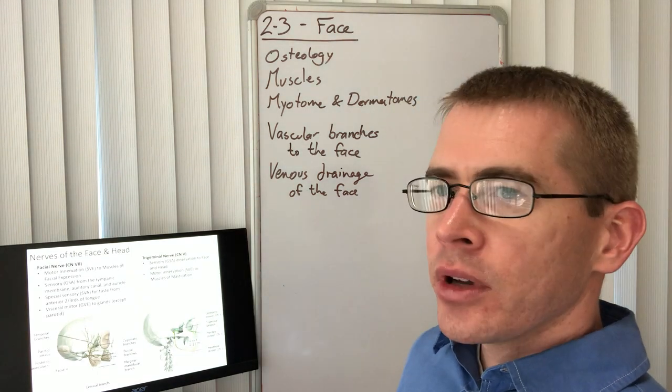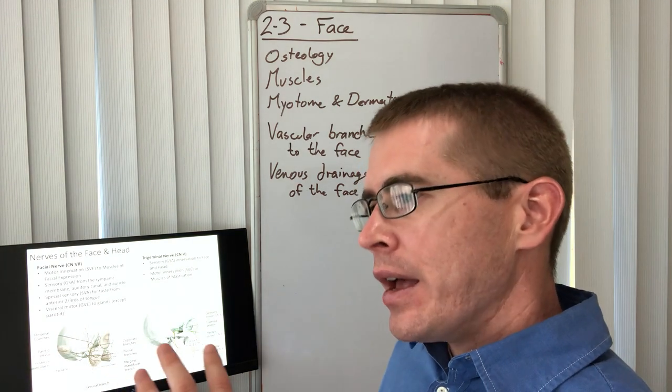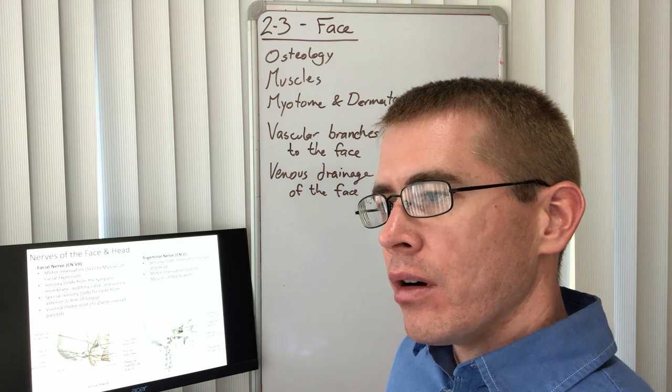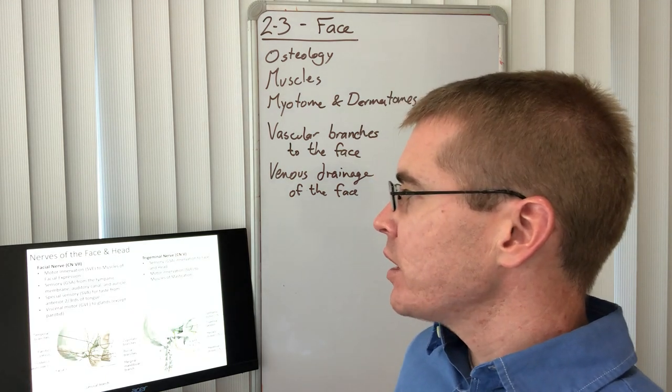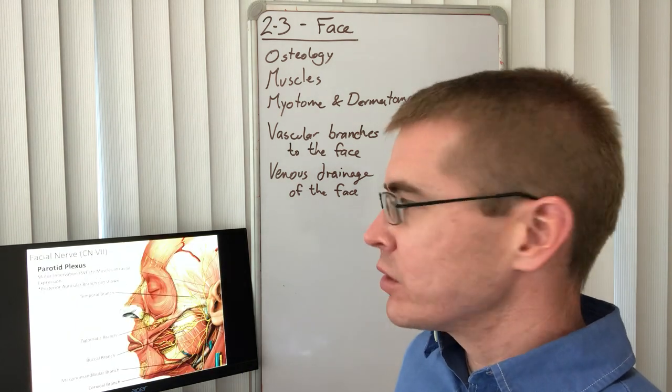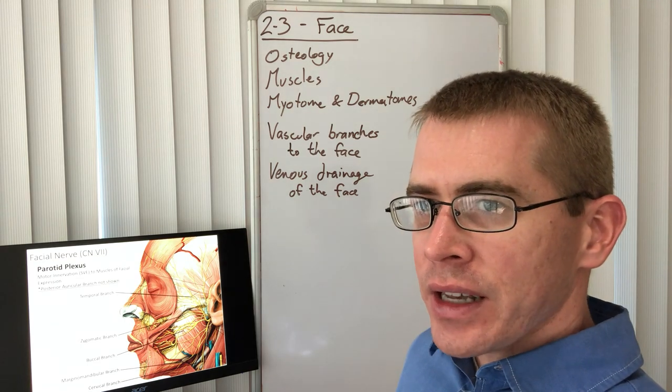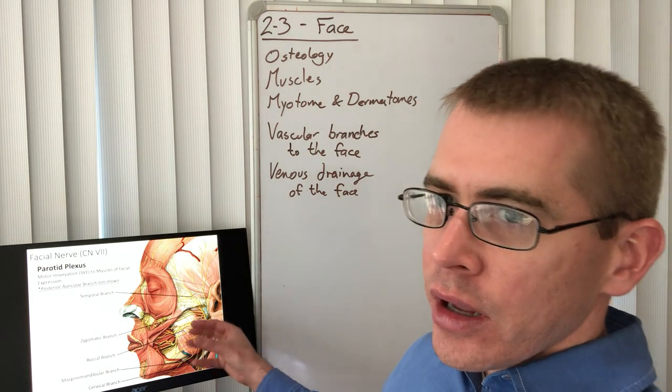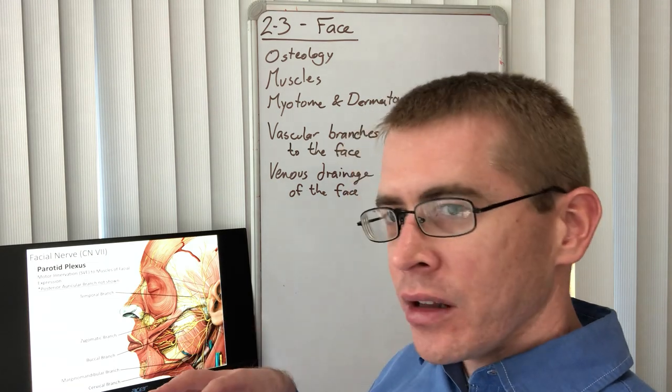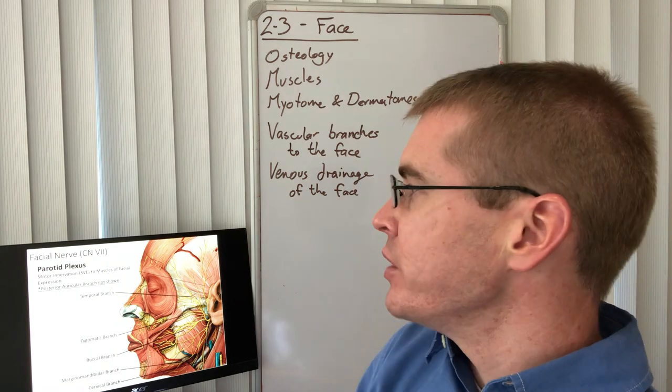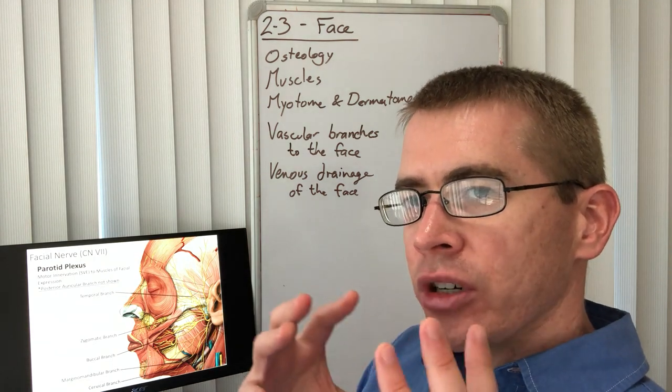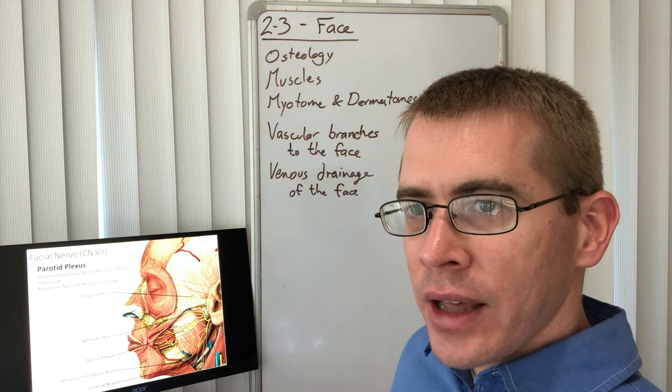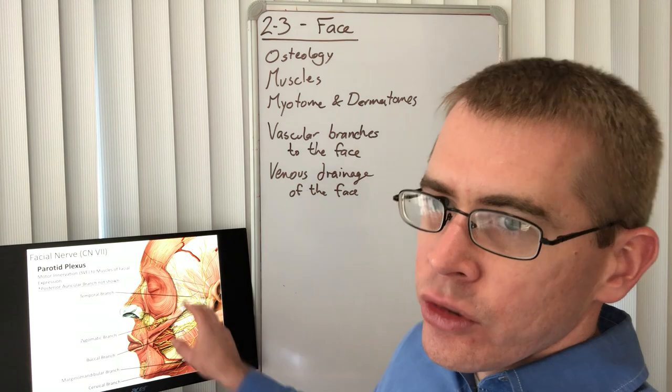Next slide, we're looking at the motor and sensory components of the face. We want to understand how these components are controlled by the central nervous system. We've already talked about facial nerve and trigeminal nerves, so this slide's just a quick review. Facial nerve exits at the stylomastoid foramen just here inferior to the ear.